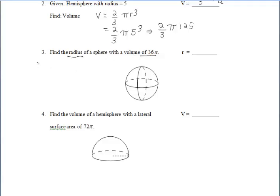For number three, we want to find the radius of a sphere with a volume of 36 pi, so we're working backwards. The volume of the sphere can be found by doing 4 thirds pi r cubed. We know our volume is 36 pi, so we're setting that equal to 4 thirds pi r cubed.